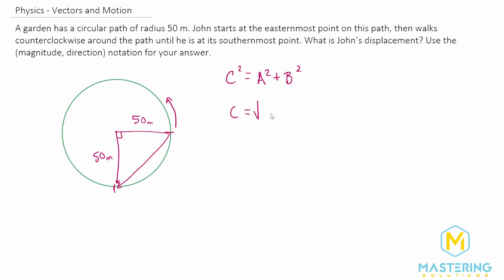So the square root of a² plus the square root of b². And now when we plug in our values we have the square root of 50² plus the square root of 50².